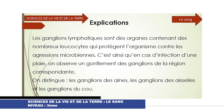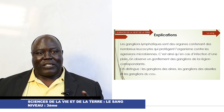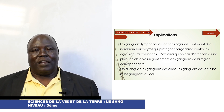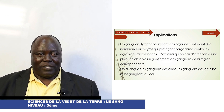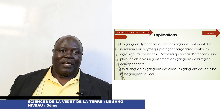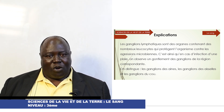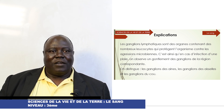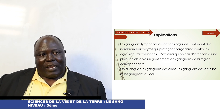Les ganglions lymphatiques sont des organes contenant de nombreux leucocytes qui protègent l'organisme contre les agressions ou les attaques microbiennes. C'est ainsi qu'en cas d'infection d'une plaie, on observe un gonflement des ganglions de la région correspondante. Par exemple, si la plaie est au niveau du pied et qu'elle est infectée avec du pus, on observe un gonflement au niveau de la zone comprise entre la cuisse et l'abdomen.